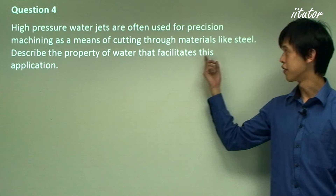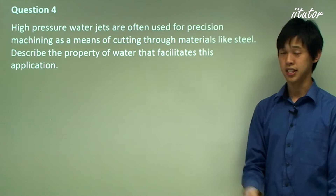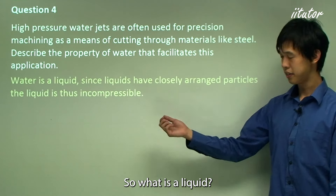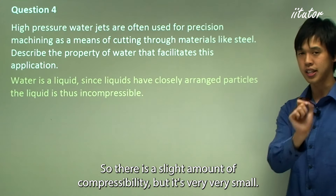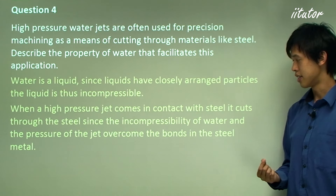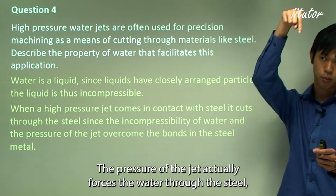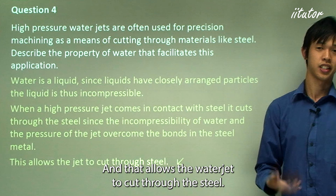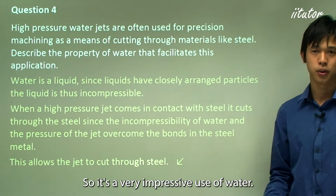Question four: high-pressure water jets are often used for precision machining, cutting through materials like steel. The relevant property is that water is a liquid. Since liquids have closely arranged particles, the liquid is essentially incompressible. When a high-pressure jet comes into contact with steel, the incompressibility of the water and the pressure of the jet overcome the bonds in the steel, forcing the water through it and cutting it — a very impressive application.